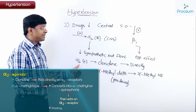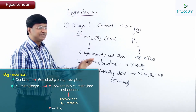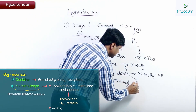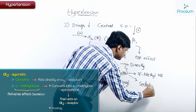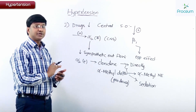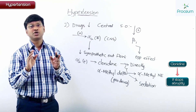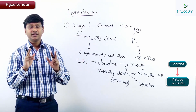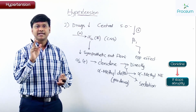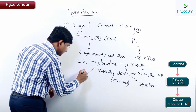Both drugs have alpha-2 agonistic activity and thereby reduce central sympathetic outflow. An important adverse effect common to both clonidine and alpha-methyldopa is sedation. Another important point: clonidine should not be stopped abruptly — if the individual abruptly stops clonidine, that can lead to rebound hypertension.